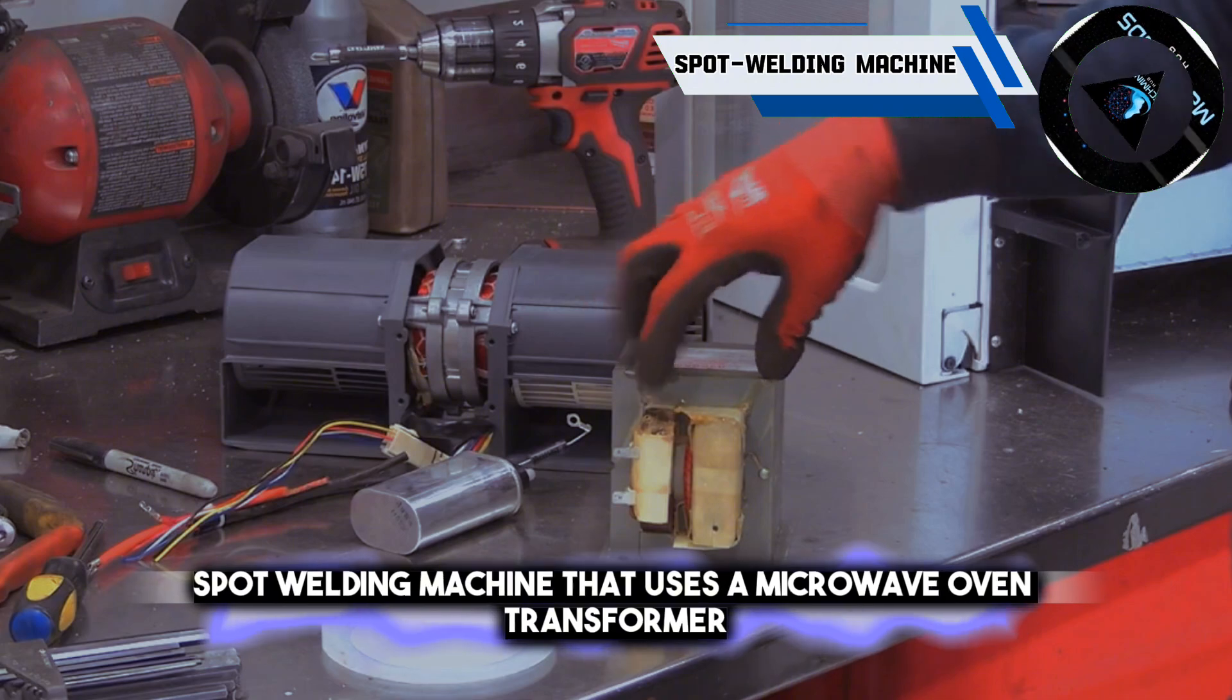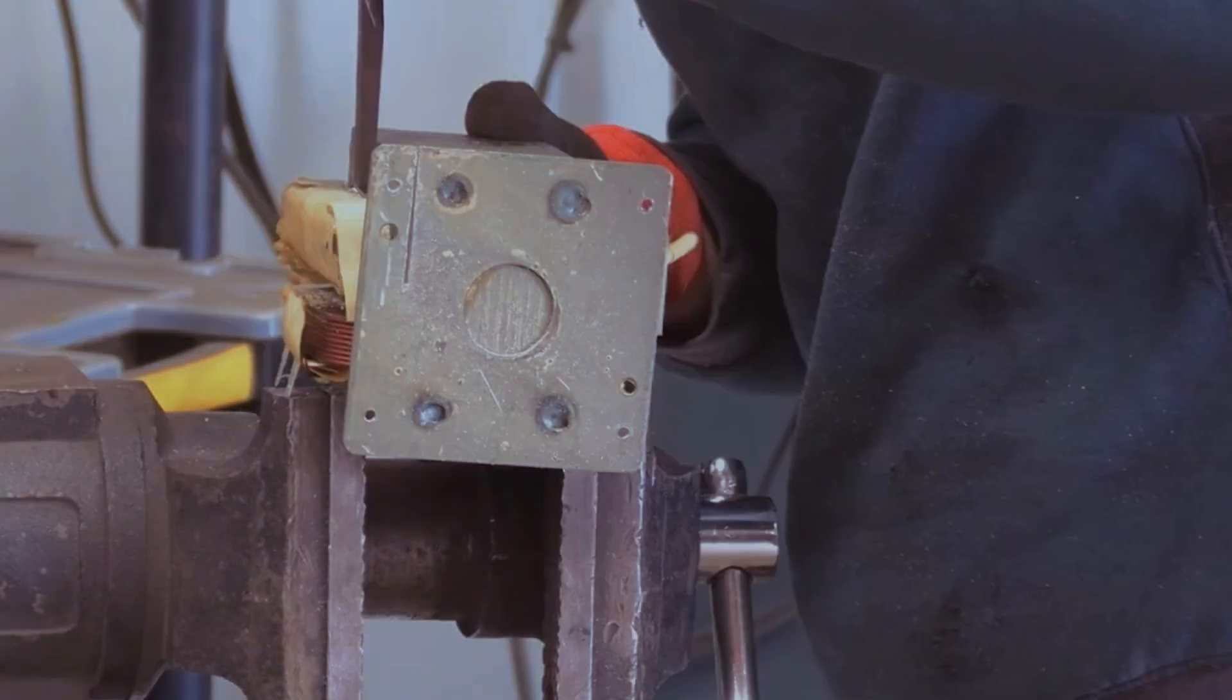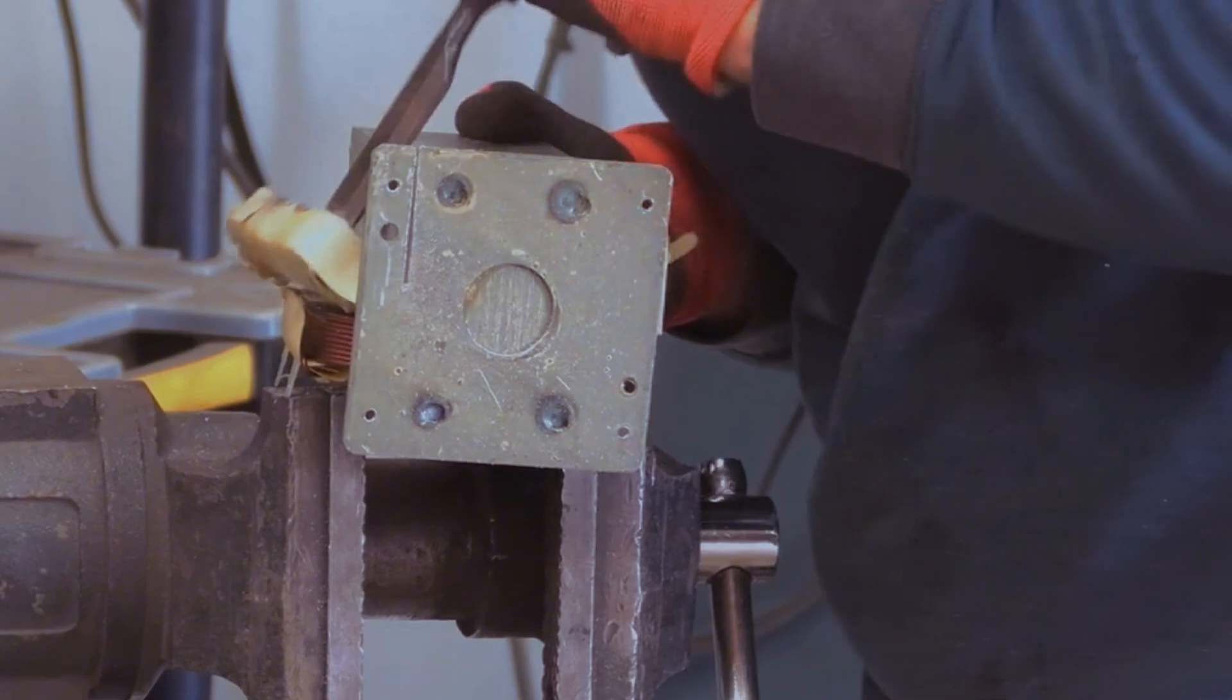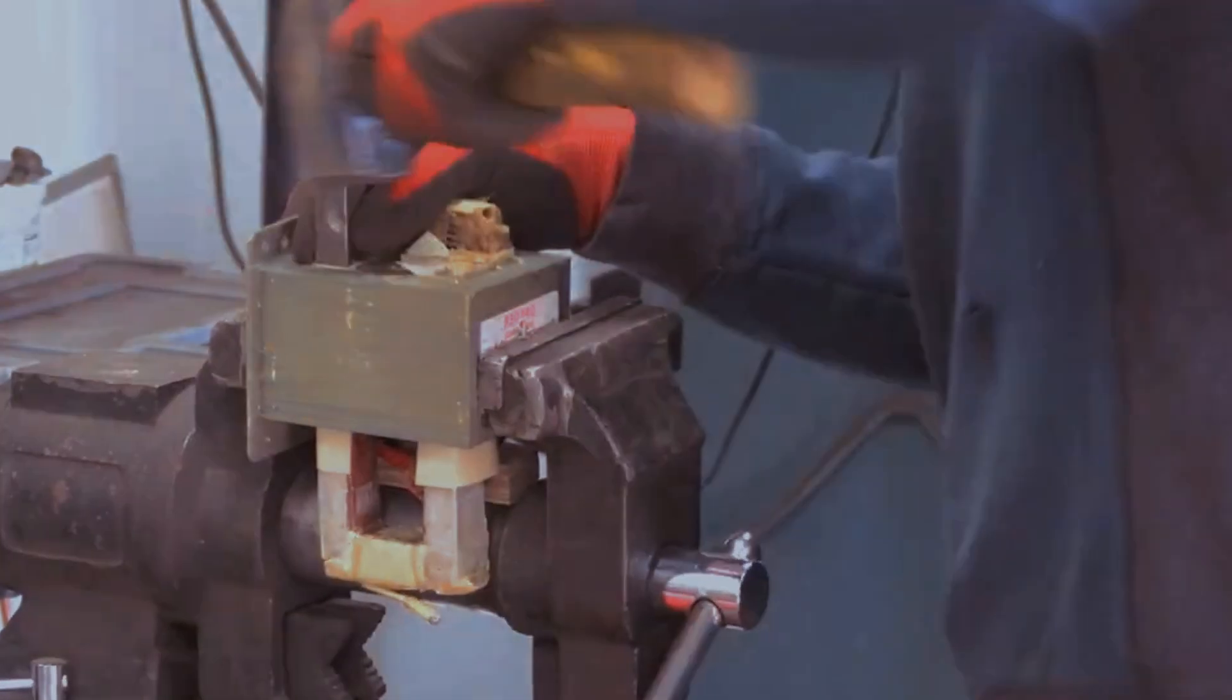The third improvised machine is a spot welding machine that uses a microwave oven transformer. A spot welding machine is a type of welding machine that can join metal pieces together by creating a small weld at a specific point.